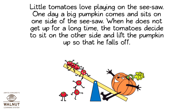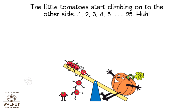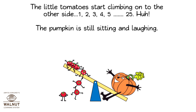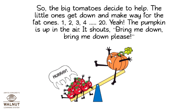Little tomatoes love playing on the seesaw. One day a big pumpkin comes and sits on one side. When he does not get up for a long time, the tomatoes decide to sit on the other side and lift the pumpkin up so that he falls off. The little tomatoes start climbing on — one, two, three, four, five — they go on till there are twenty-five, but the pumpkin is still sitting and laughing. So the big tomatoes decide to help.